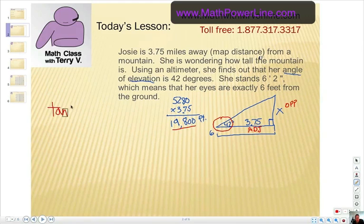Hopefully you'll remember that that's the tangent function. We're going to take the tangent of the angle, which was 42 degrees. It's opposite over adjacent, so that would equal x over 19,800. Remember, we're going to convert to feet here.